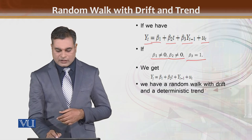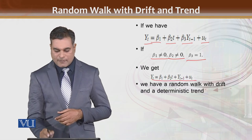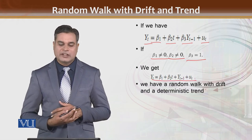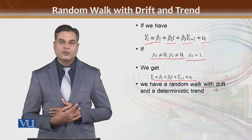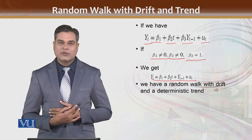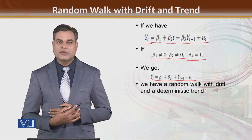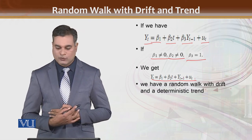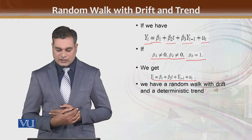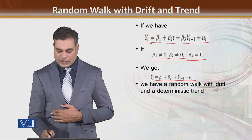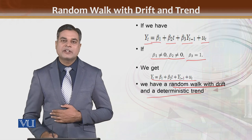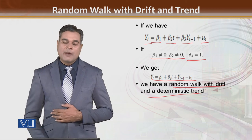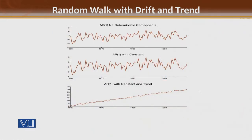After this, the new model becomes: yt = beta 1 + beta 2t + yt-minus-1, because the coefficient value is equal to 1. This is called a random walk with drift and deterministic trend. Now let's explain this further.